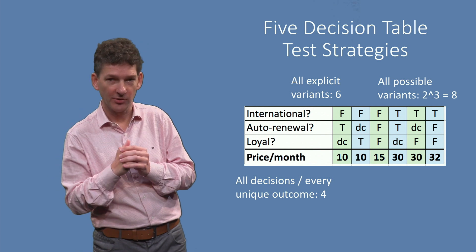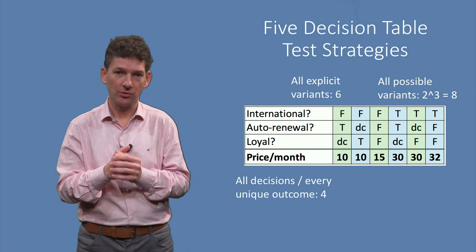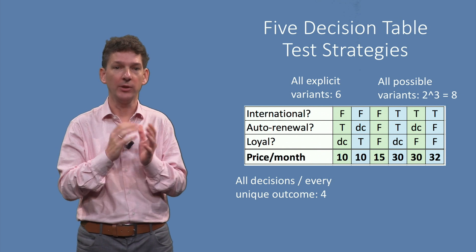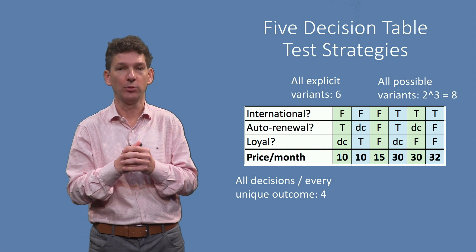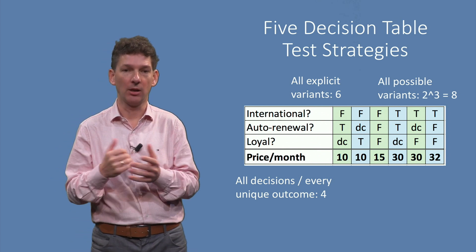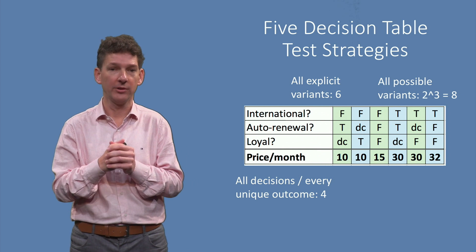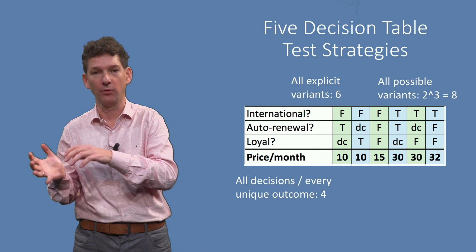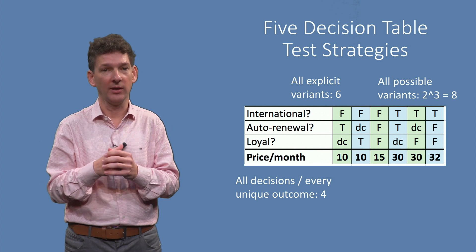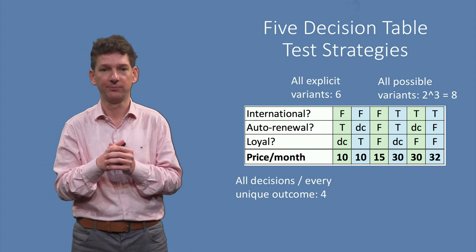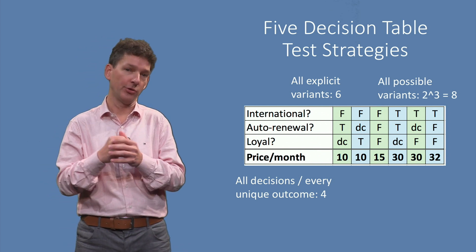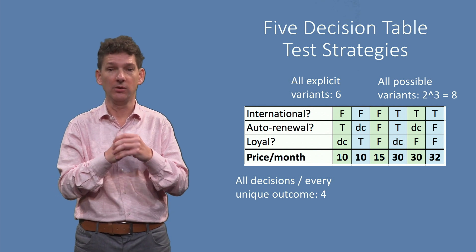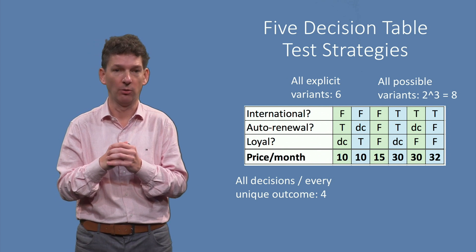The all decisions strategy targets all different variant outcomes, leading to one test case for each possible action. In our example, there are 4 different possible outcomes: 10, 15, 30 and 32, and we create a test for each of the outcomes. This usually yields fewer tests than all explicit variants, yet still covers all possible outcomes.